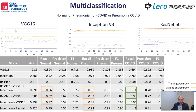An encouraging finding is the improvement of recall in the detection of COVID-19 using the ensemble-based approaches compared to the single models. Considering the impact of COVID and that our approach is intended to assist radiologists, we can accept false positives as they do not contribute to potential spread, while false negatives would be a serious concern. However, the variation in recall across the three classes must be investigated further.